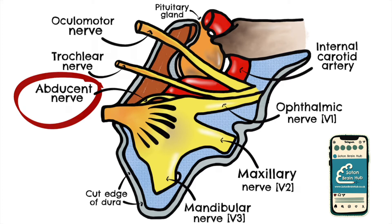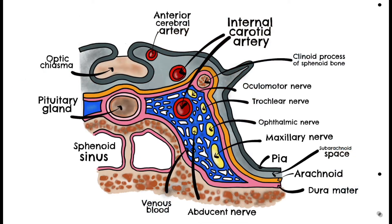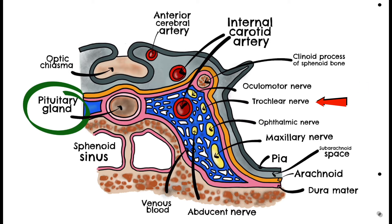Let's take a look at the cavernous sinus in a bit more detail. The cavernous sinus is a paired dural venous sinus located in the middle cranial fossa. In the centre lies the sella turcica of the sphenoid bone, which contains the pituitary gland. Several important structures pass through the cavernous sinus including the oculomotor nerve, the trochlear nerve, the ophthalmic and maxillary branches of the trigeminal nerve, and the abducens nerve.